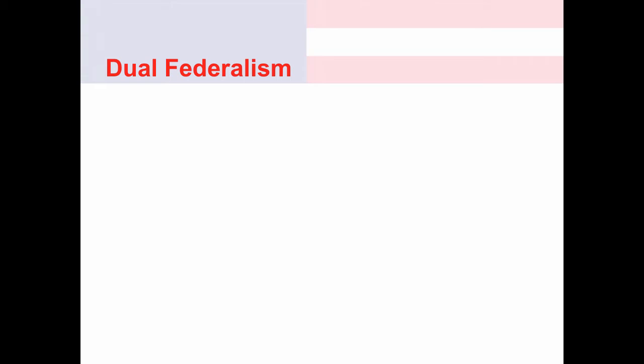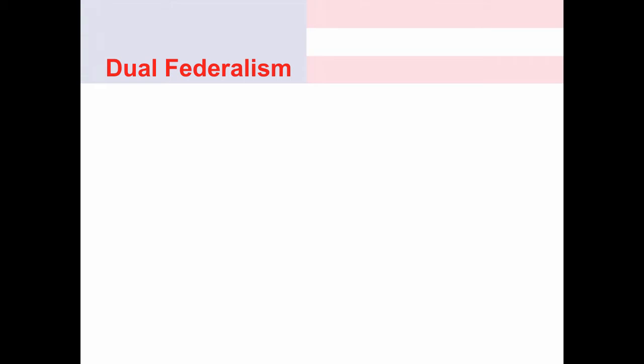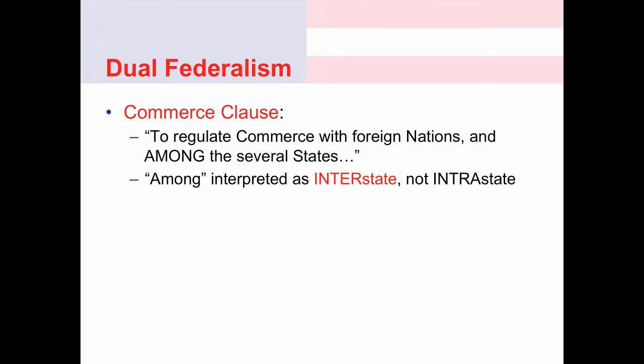A lot of the debates about federalism get wrapped up in the Commerce Clause. You don't need to know the exact quote, but the Commerce Clause is part of Article 1, Section 8, which says Congress has power to regulate commerce with foreign nations and among the several states. The Supreme Court has interpreted 'among' to mean interstate commerce, not intrastate. Interstate means commerce that exists between states — for instance, something shipped from Colorado to Wyoming. Intrastate commerce occurring only within Wyoming's boundaries is left to the states under dual federalism.